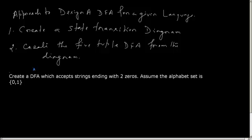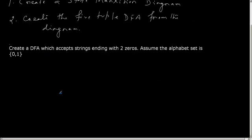How will you solve this problem? The first thing I need to do is create a state transition diagram. Initially, suppose I assume that the DFA is in state Q0, starting state Q0.